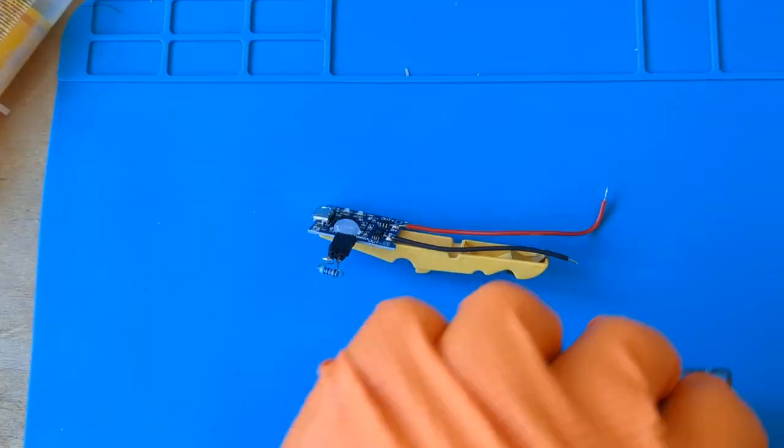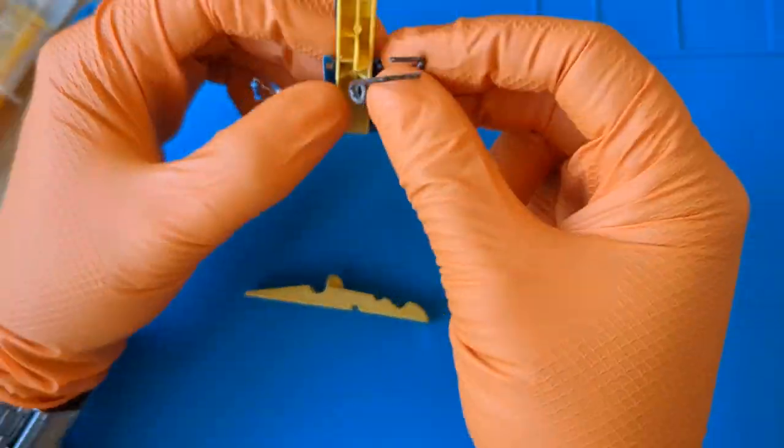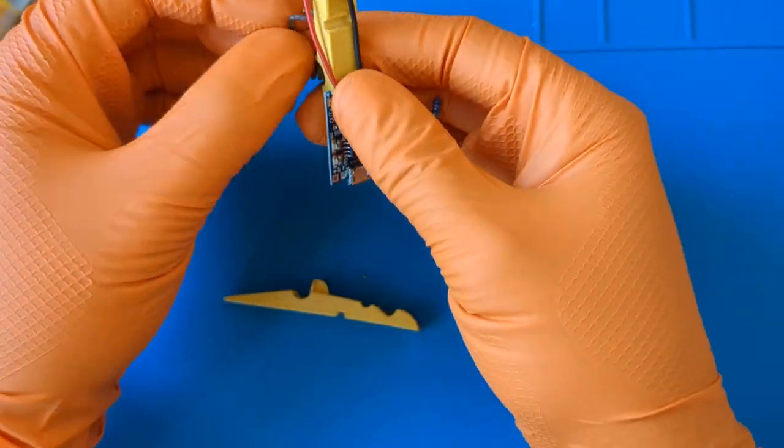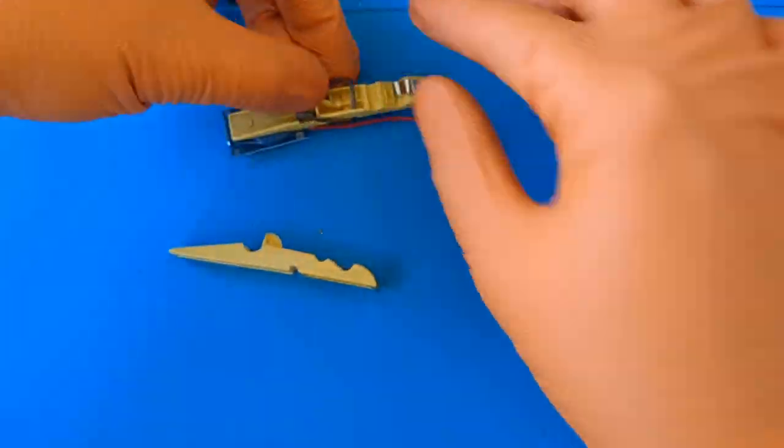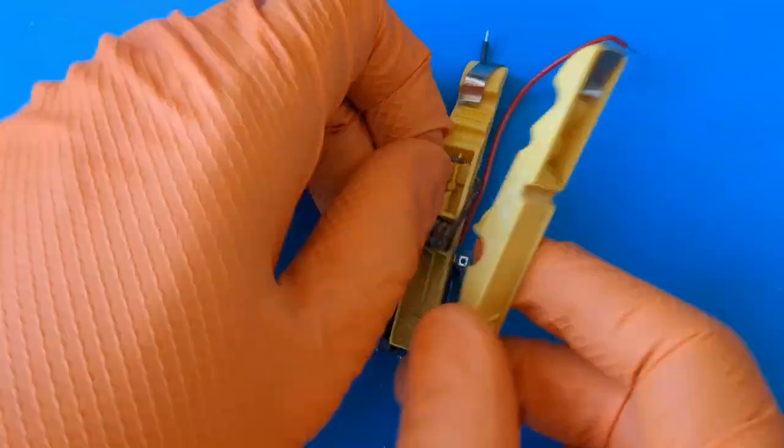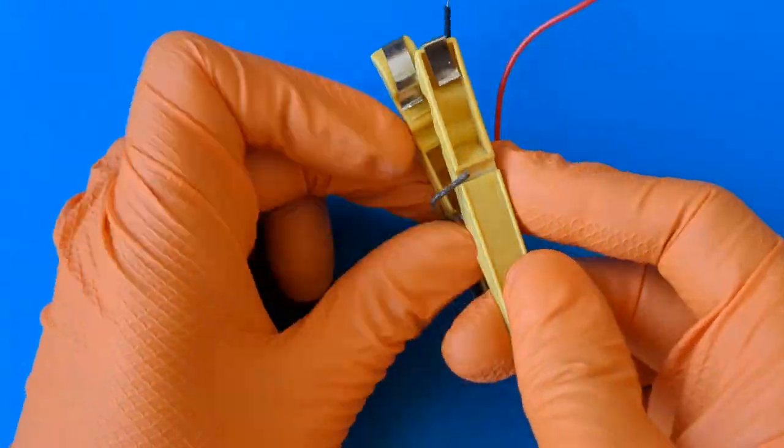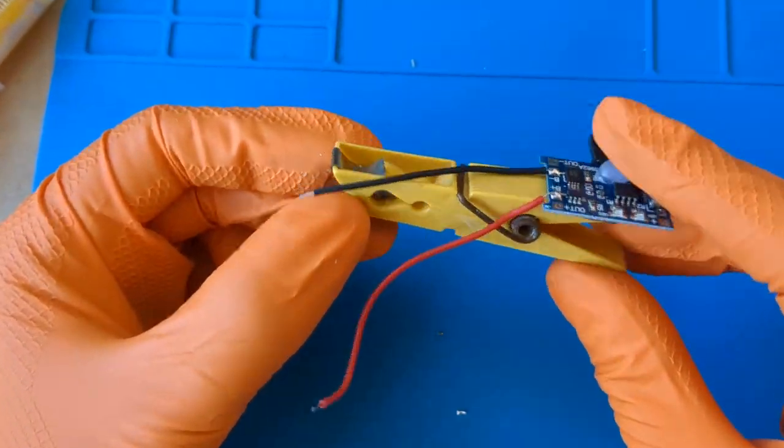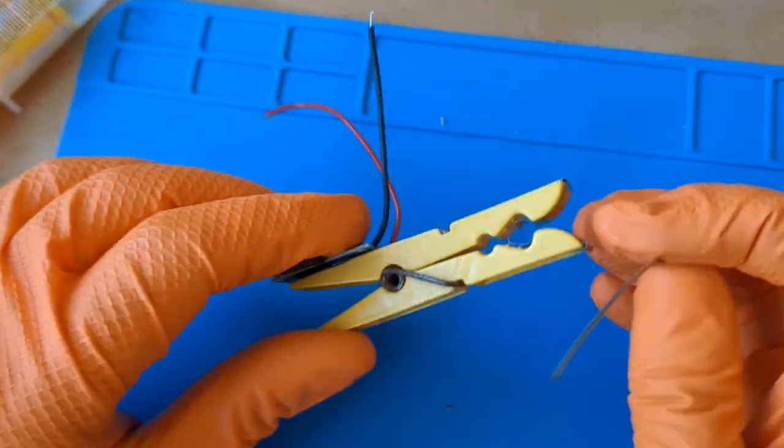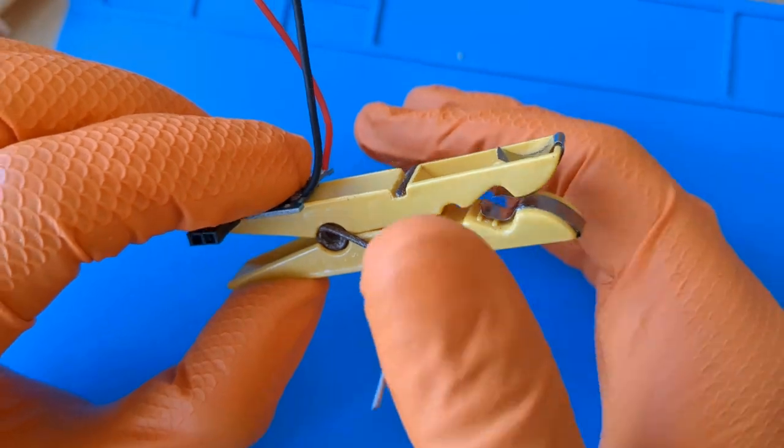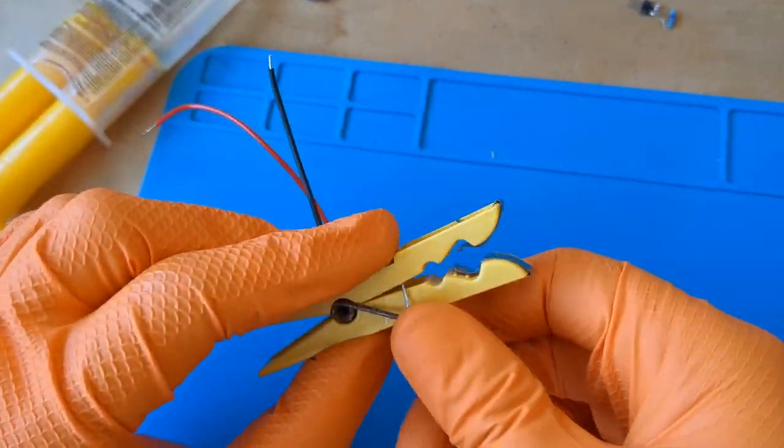Let's assemble the clothespin. I added a wire to create a small shim to prevent a short circuit.